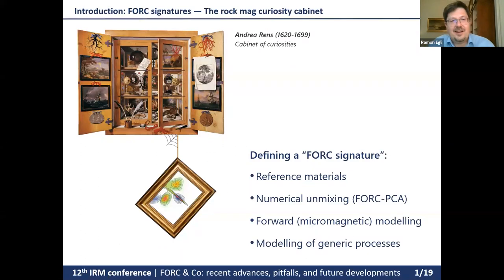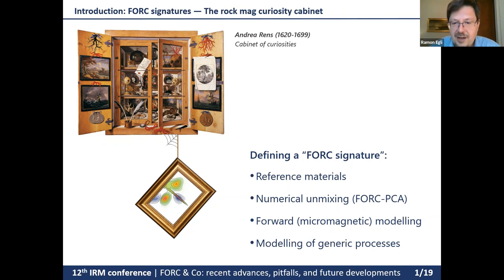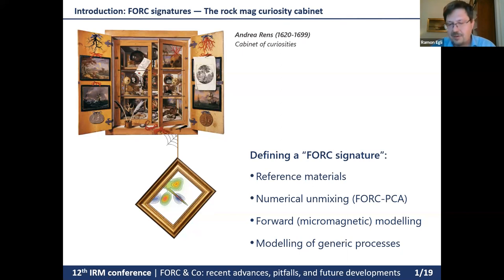Today I want to show you some curiosities about FORC diagrams — a kind of travel through signatures. FORC signatures are a sort of elemental unit in FORC diagrams that enable us to recognize certain types of particles or certain types of magnetization processes. A FORC signature can be related to certain types of particles or a certain magnetization process. To define a FORC signature we need reference materials, end members from numerical unmixing of natural materials, forward micromagnetic modeling, and modeling of generic magnetization processes.